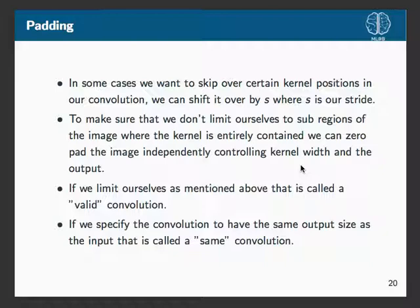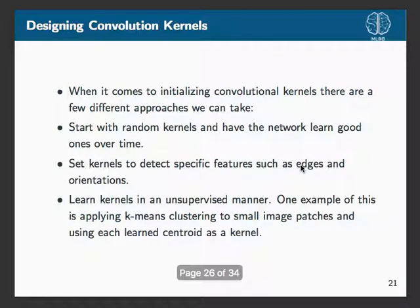Often in conjunction with stride, suppose the kernel doesn't fit into every sub-region of the image and we want to independently control the kernel size and output width. We can pad the image with zeros so we can continue doing our convolution as many times as we want, independent of the initial input size. This is called a same convolution in MATLAB or TensorFlow. If we don't do this, it's called a valid convolution.